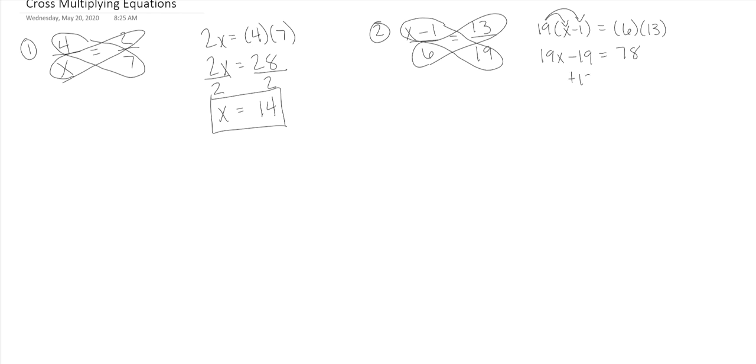Then you add 19 to both sides to move that one over. Bring that 19X down. 78 plus 19 is 97. Divide both sides by 19 to isolate the variable. And X is 5.1. You can leave it 97 over 19 especially for pre-AP if you're not allowed to use calculators, so you absolutely could divide that which would give you about 5.1.